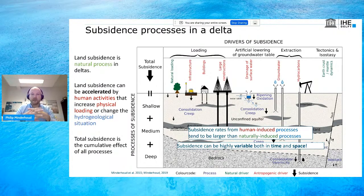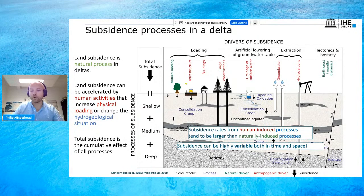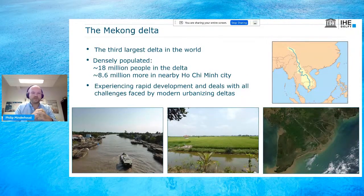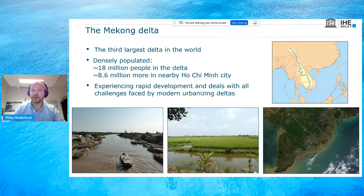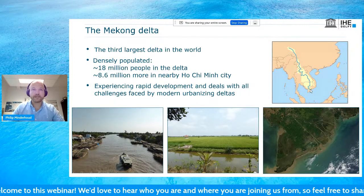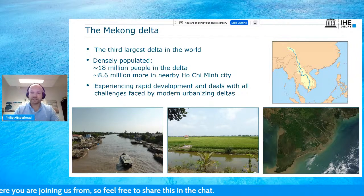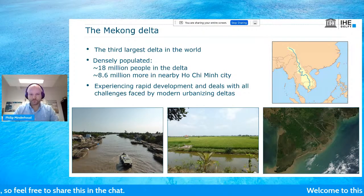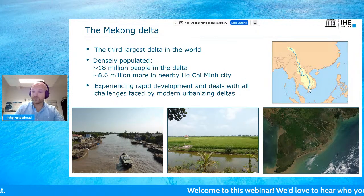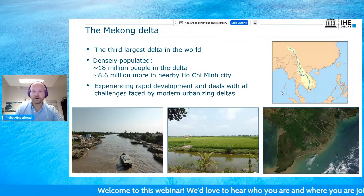Land subsidence can also be highly variable in time and space, so depending on where you are in the delta, different factors are more important in driving it. The Mekong Delta is the third largest delta in the world, created by the Mekong river that flows from the Himalayas through Southeast Asia and enters the sea in the south of Vietnam. It is very densely populated — 18 million people in the delta and almost 9 million people in Ho Chi Minh City, which is in an adjacent delta very close to the Mekong Delta. It has experienced rapid development and is dealing with all the challenges we see in modern urbanizing deltas.